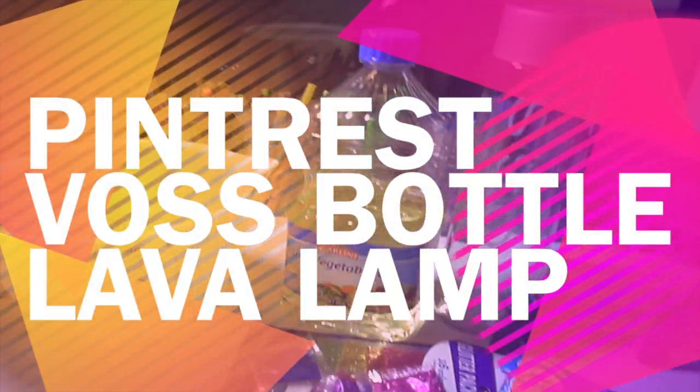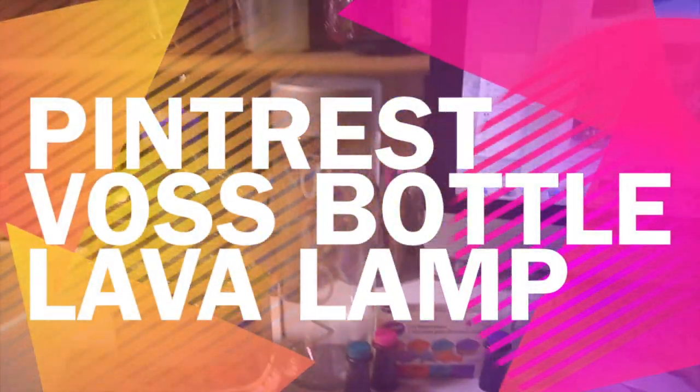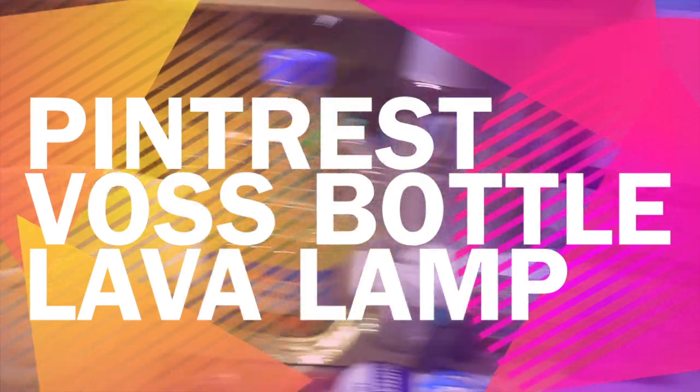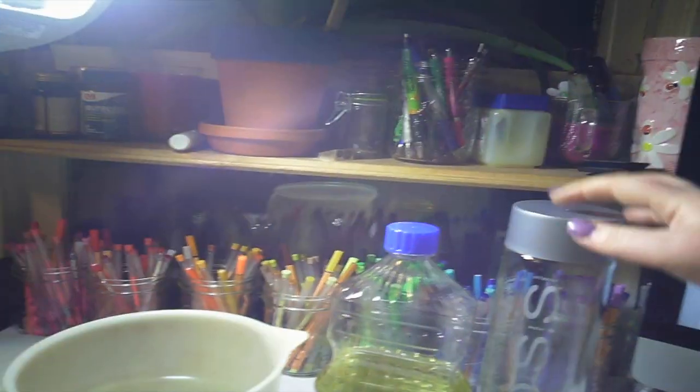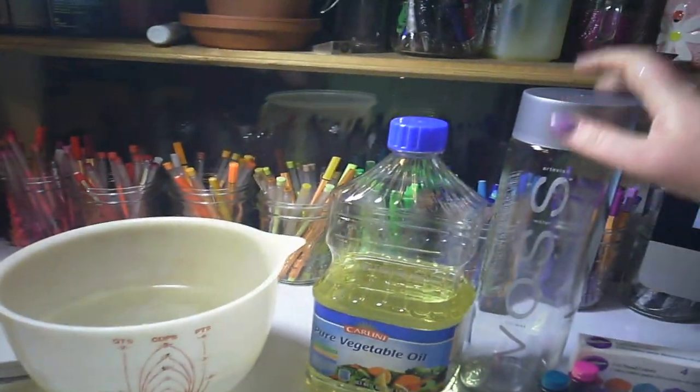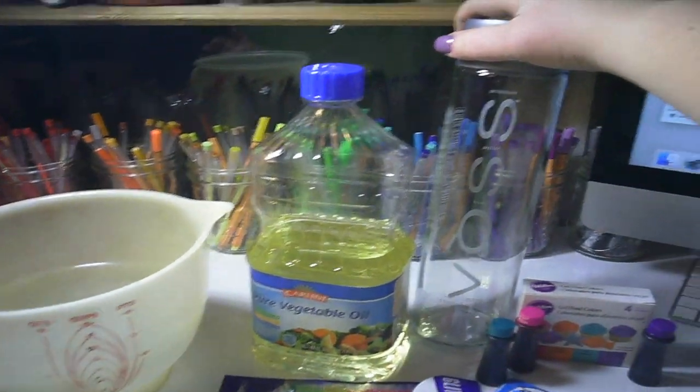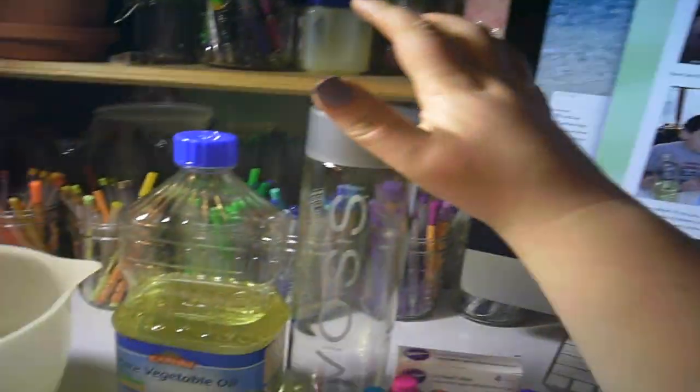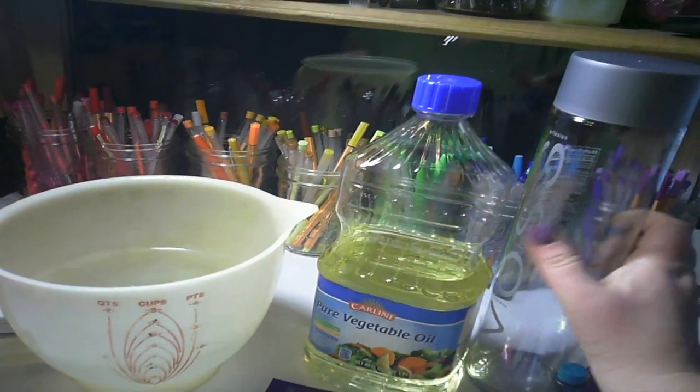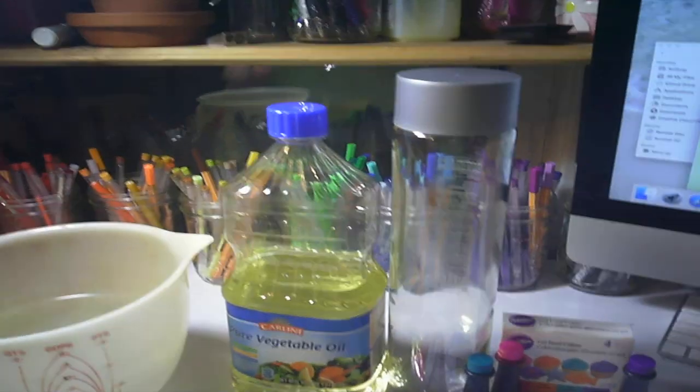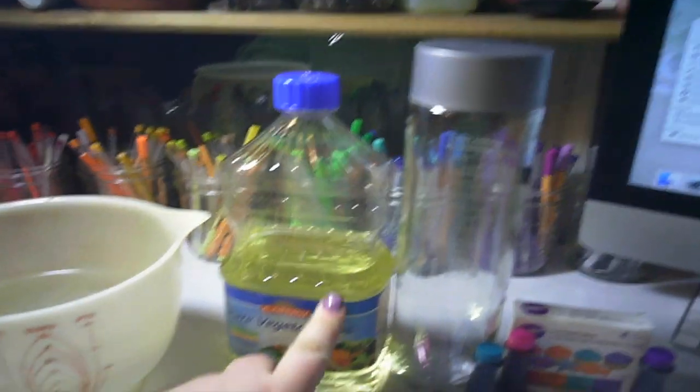DIY craft today - I'm making a lava lamp using this Voss water bottle. If you watch my video, you'll know I did something beforehand. What you'll need is vegetable oil, pure vegetable oil.